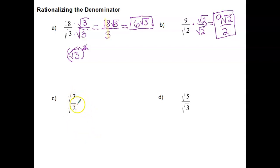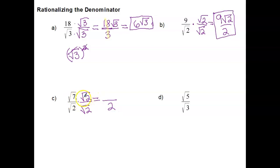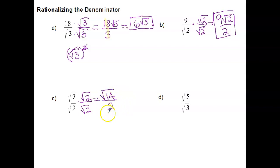What if you have a radical in both the numerator and the denominator? Same thing — we still multiply by the radical that's in the denominator. When we multiply square root of 2 times square root of 2, that's when the radical sign goes away. But if we're multiplying two different square roots together, we keep the radical sign and multiply the numbers underneath. So square root of 7 times square root of 2 gives us the square root of 14. And similar to before, I can't simplify the radical 14 with the 2, because the square root of 14 is about 3-point-something, not 14.